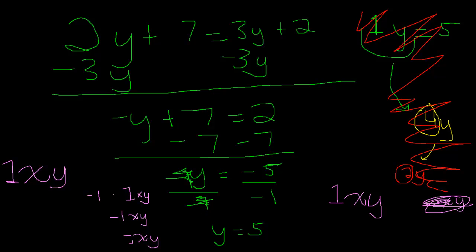it results in a positive number. So negative 1y divided by negative 1 becomes 1y. And negative 5 divided by negative 1 - this is like changing the sign - gives us 5.